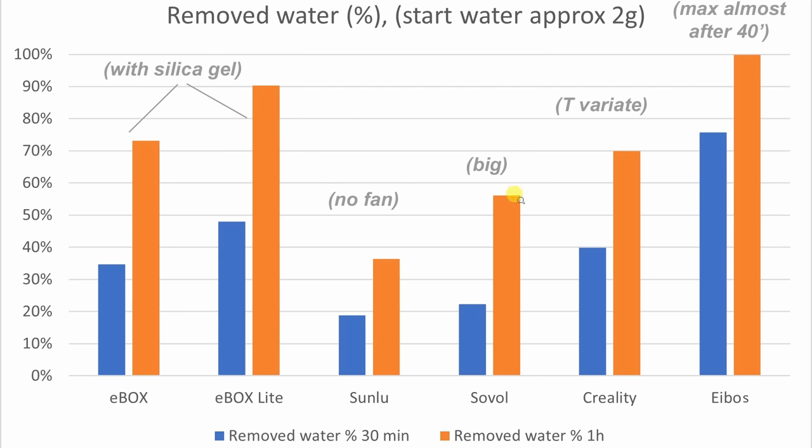Similar was with the Sovol. This was a much bigger dryer so it starts drying a little bit later with some delay. It has a fan but it doesn't have the silica gel, and also here we could see moisture on the walls.